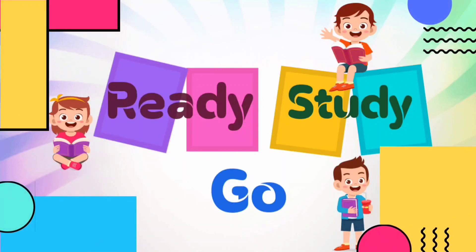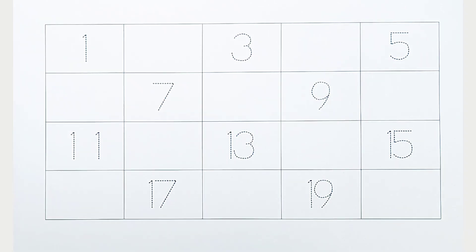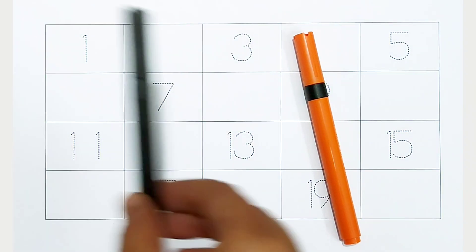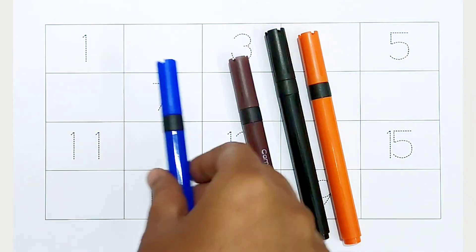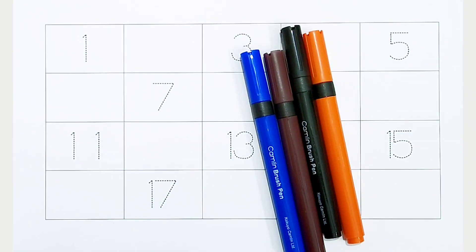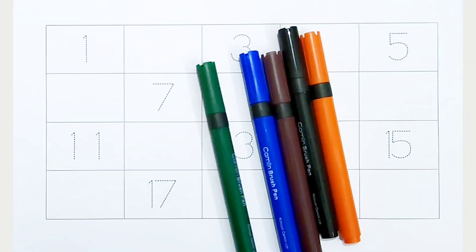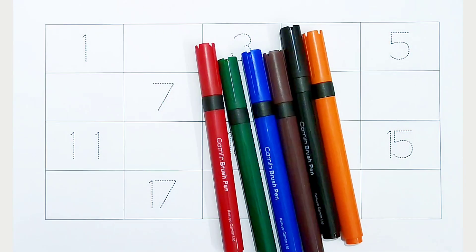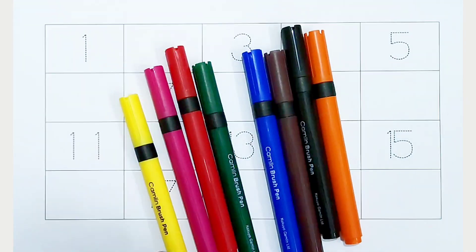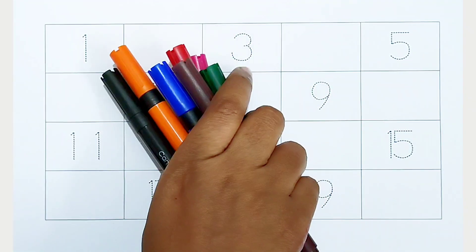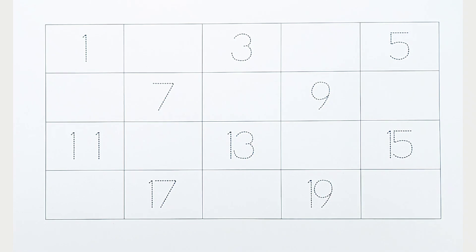Ready, study, go! Orange color, black color, brown color, blue color, green color, red color, pink color, yellow color. Hi kids, today we can learn the numbers from 1 to 20.